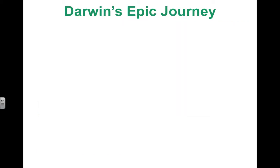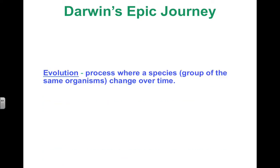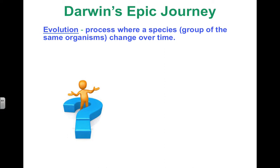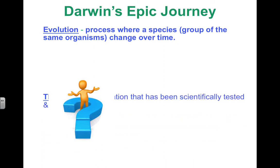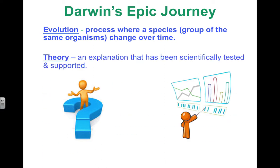He developed a scientific theory of evolution that explains how organisms evolved or changed over long periods of time and that organisms came from ancestors. Outside the science world, a theory might mean an idea or a guess, but in science a theory is an explanation that has been backed up by many experiments, investigations, and observations. As time goes on, the evolutionary theory continues to develop and expand because of new information.